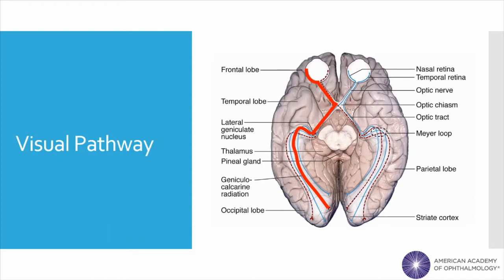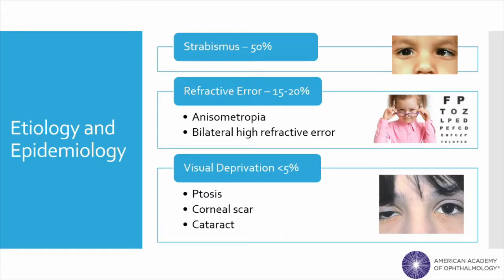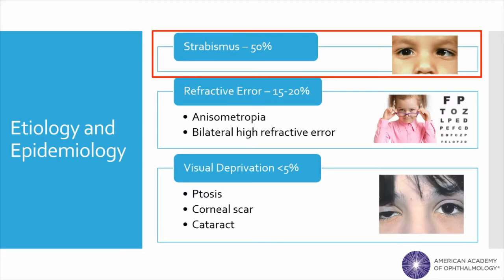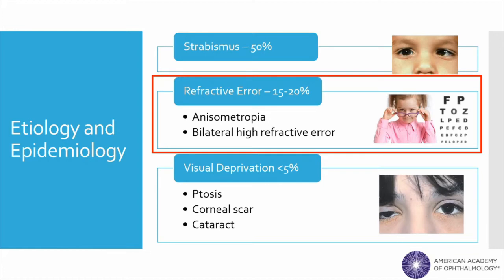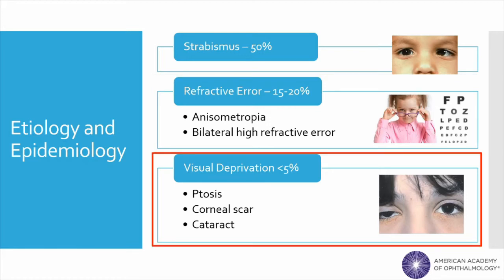If there is an interruption anywhere in this pathway, the connections between the eye and the brain do not develop properly and vision may be decreased despite a normal structural appearance of the eye. There are three main causes of amblyopia. The most common cause is strabismus, when the eyes are misaligned, and this represents approximately half of all cases. Refractive error accounts for 15 to 20 percent of amblyopia cases. Finally, deprivation amblyopia, which is the least common type, occurs when there is something physically blocking the vision.